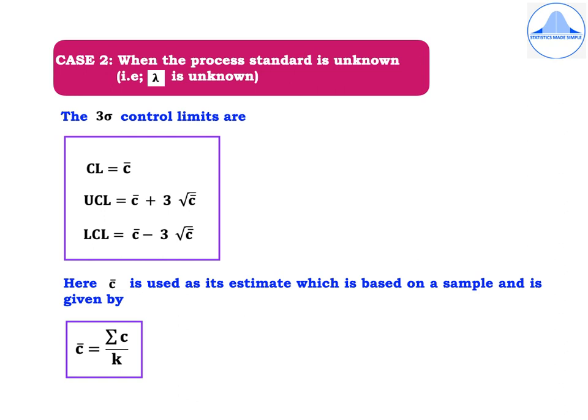In this case, the 3-sigma control limits are given by: CL = C-bar, UCL = C-bar + 3√(C-bar), and LCL = C-bar − 3√(C-bar). Here, C-bar is used as its estimate, which is based on a sample and is given by C-bar = summation of C divided by K.